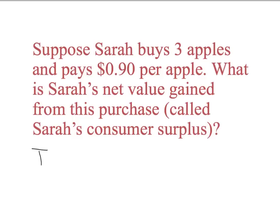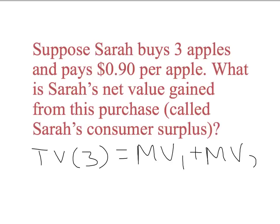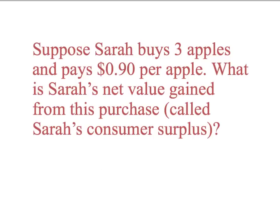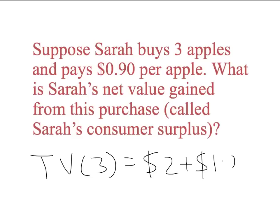Sarah's total value from three apples — TV — is simply equal to the marginal value of her first apple, plus the marginal value of her second apple, plus the marginal value of her third apple. So Sarah's total value of three apples is equal to $2, plus $1.20, plus $1, which equals $4.20. That's the total value to Sarah when she buys three apples.